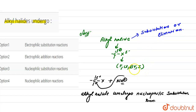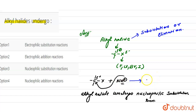In the substitution reaction, it is called nucleophilic substitution reaction because the electrophilic alkyl halide forms a new bond with the nucleophile, which substitutes for the halogen at the alpha carbon. When this reaction occurs, the nucleophile group attaches to the carbon and the halide acts as a good leaving group.